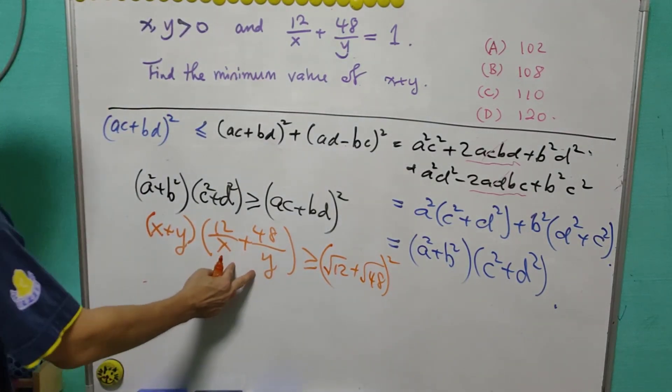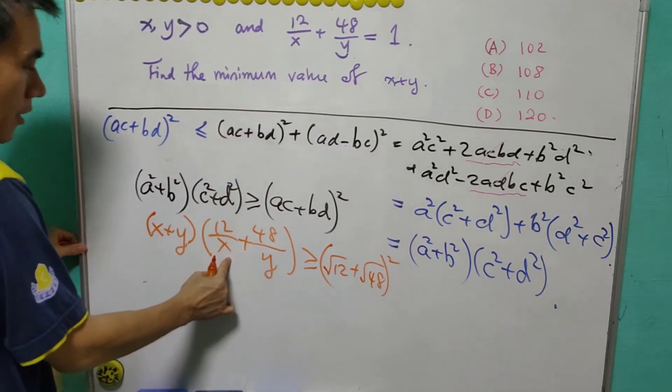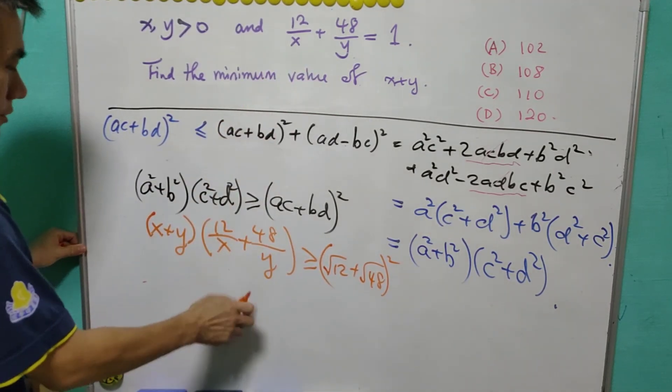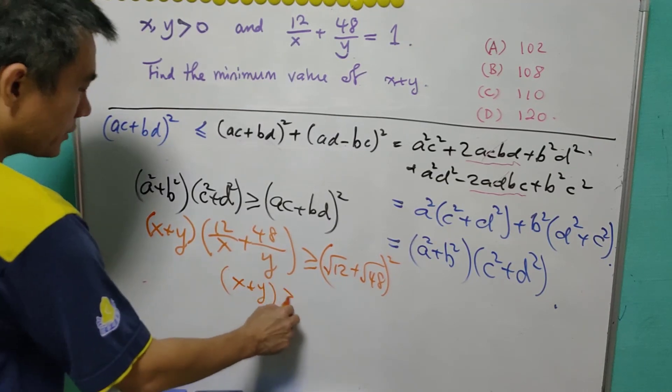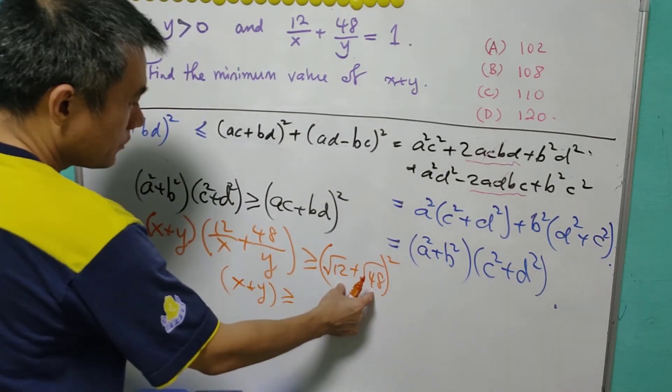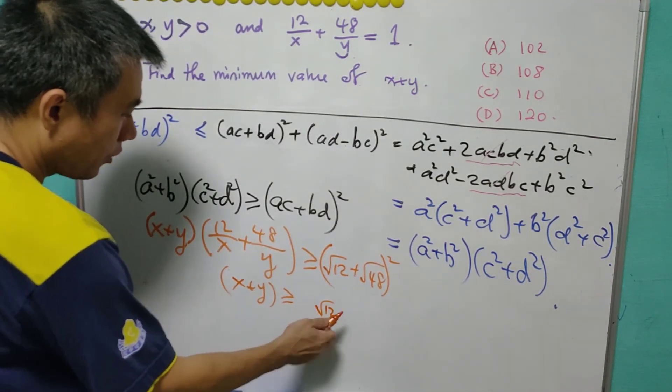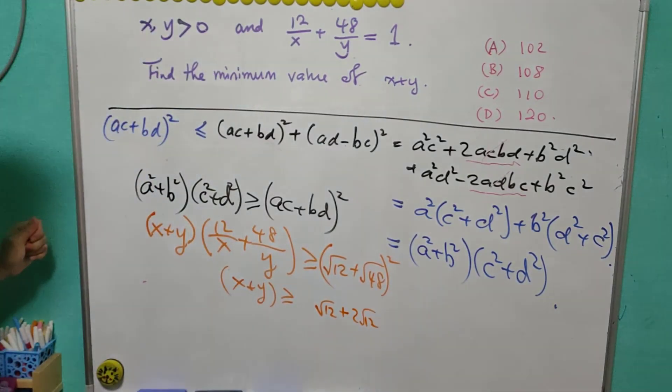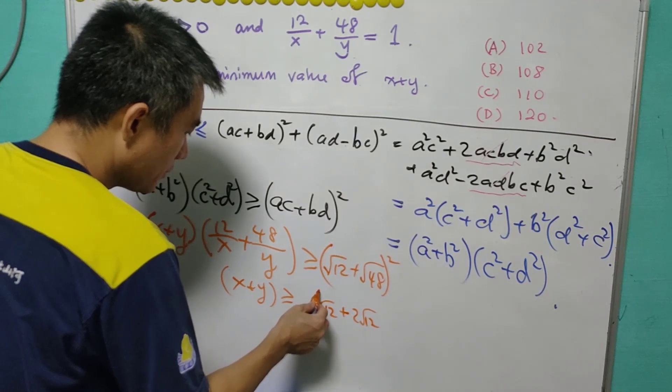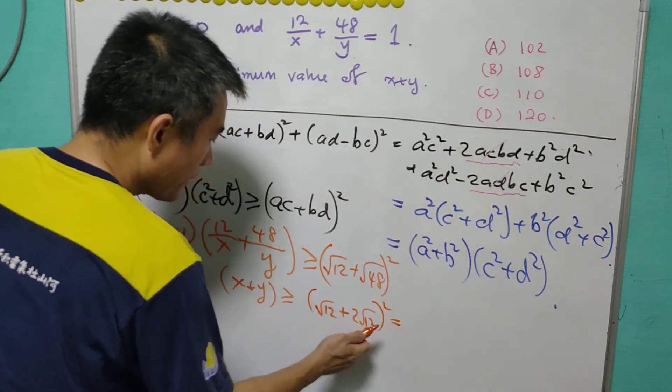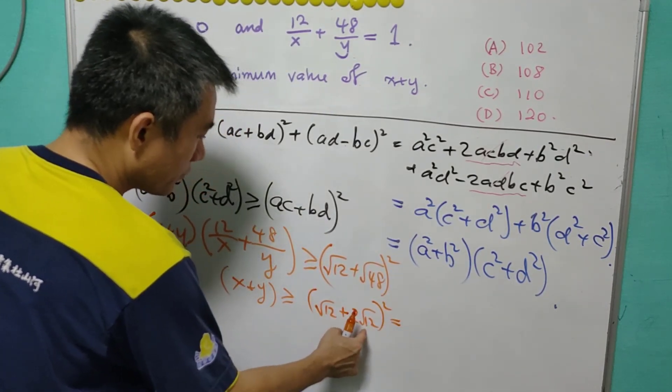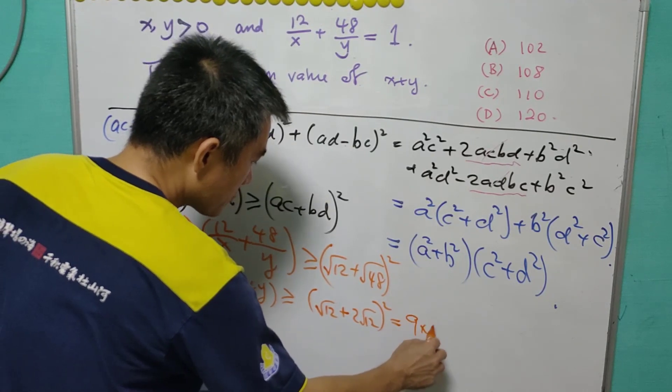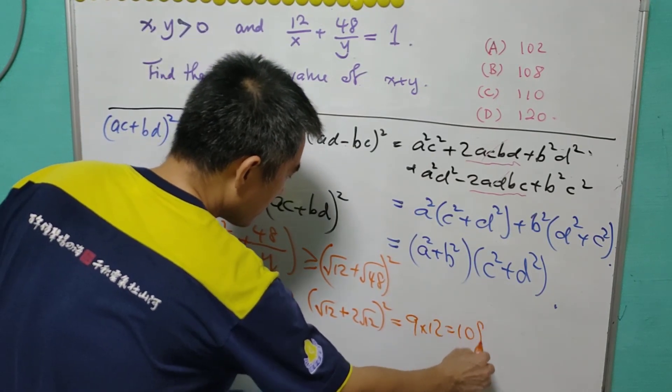We already know from the condition 12/x + 48/y = 1. So x + y will be greater than or equal to this value. We will see that this is 12 + 2√(12 × 48). 48 is 4 times 12, so it can be written in this way. And this is actually 3√12. So it will be 9 times 12 that equals 108.